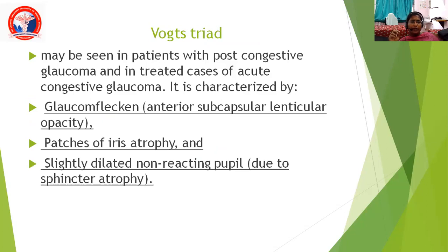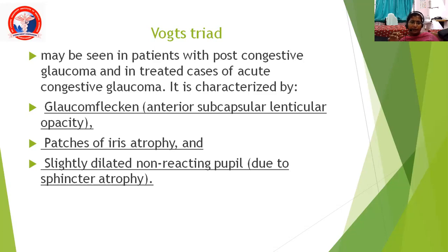Coming to Vogt's triad: it may be seen in patients with post-congestive glaucoma and in treated cases of acute congestive glaucoma. It is characterized by three things: anterior subcapsular lenticular opacity, patches of iris atrophy, and a slightly dilated non-reacting pupil due to sphincter atrophy. It is usually associated after an acute congestive attack of glaucoma.